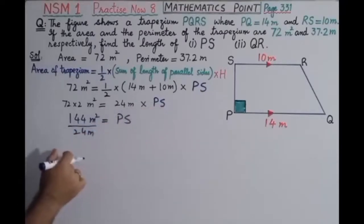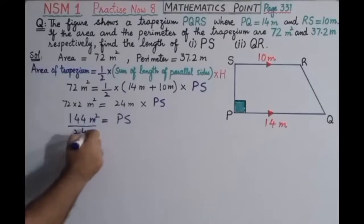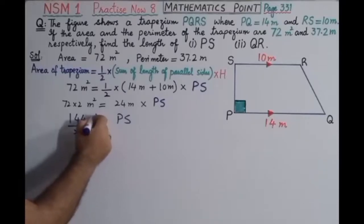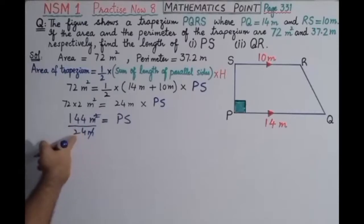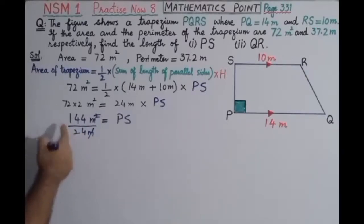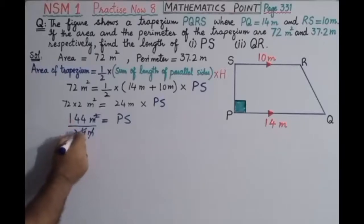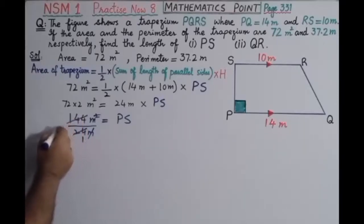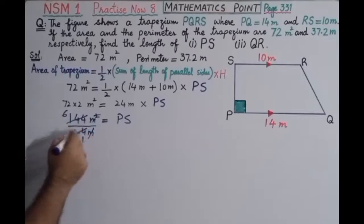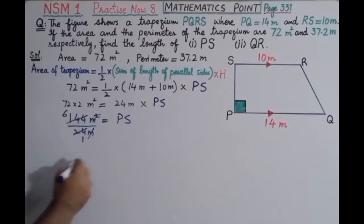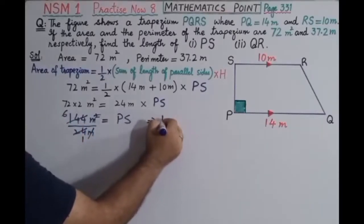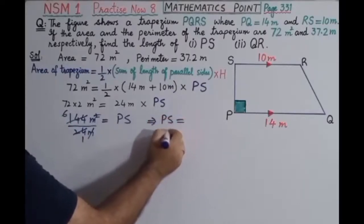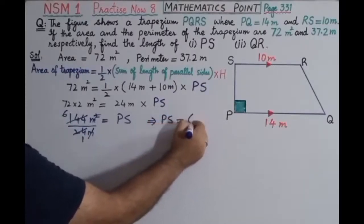The meters cancel, leaving 1 meter. Since 24 multiplied by 6 equals 144, dividing gives us 6. This implies the length PS is equal to 6 meters.